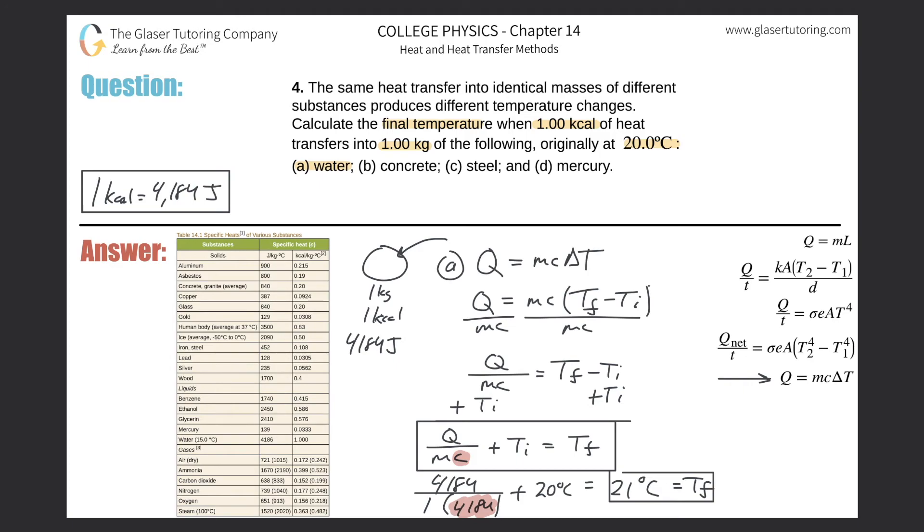For concrete, let's say we're going to use 840. For steel, we're going to be using, where are you steel? 452 there. And then mercury, wherever that is on the table, you would also use then the value of mercury, and the mercury value appears to be right about here. And just plug in 139. I'll let you guys do that. I mean, it's pretty straightforward. Like, literally, here's the formula. You just have to plug in the different values down here.